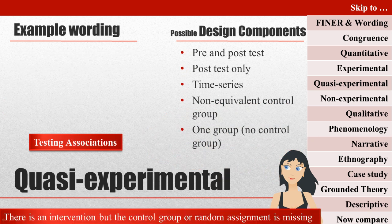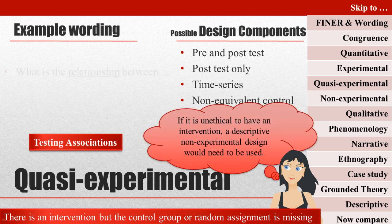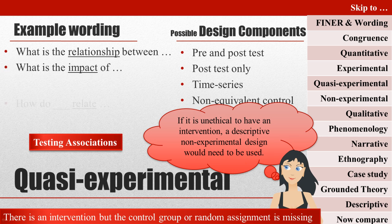If your study has a question about the impact of one variable on another, but it is impossible to do a randomized controlled trial for pragmatic reasons, a quasi-experimental study can be done. Quasi-experimental studies are like randomized controlled trial wannabes — they have an intervention, but not a control group or randomization. They are cheaper than randomized controlled trials.